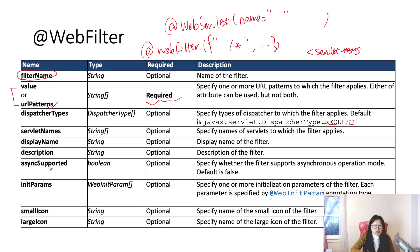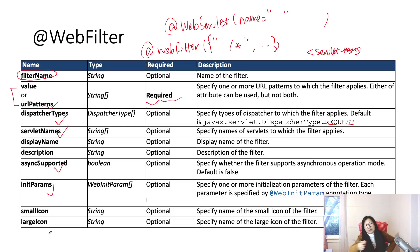You can also have displayName, description, asyncSupported, initParams, smallIcon, and largeIcon. Some of them are used by the web container, like smallIcon, largeIcon, description, and displayName. Mostly for configuration, what you need are value/urlPatterns, dispatcherTypes, servletNames, asyncSupported, and initParams.